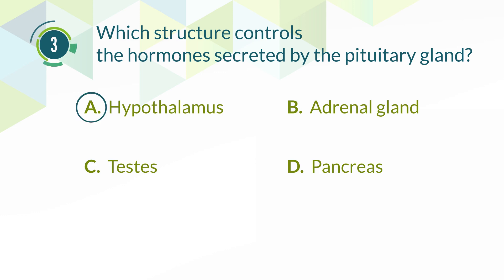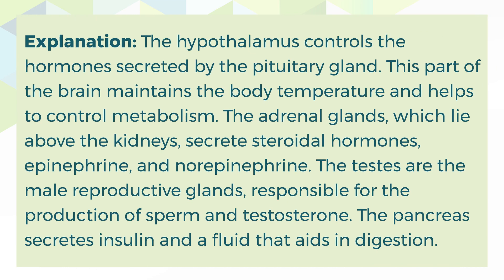The correct answer is A. Hypothalamus. Explanation: The hypothalamus controls the hormones secreted by the pituitary gland. This part of the brain maintains the body temperature and helps to control metabolism. The adrenal glands, which lie above the kidneys, secrete steroid hormones, epinephrine, and norepinephrine.